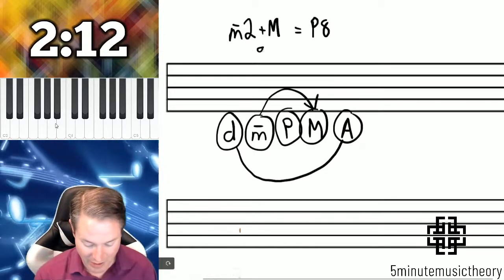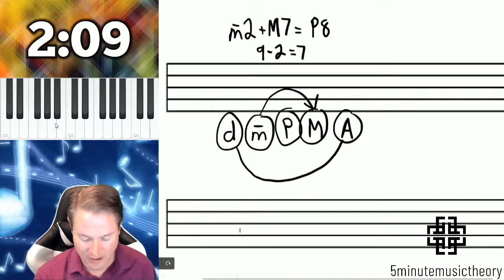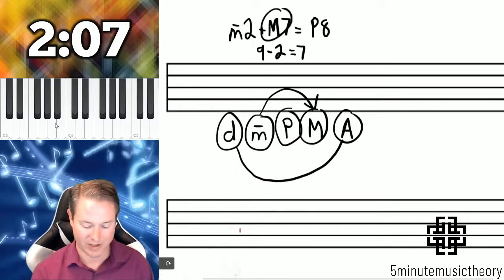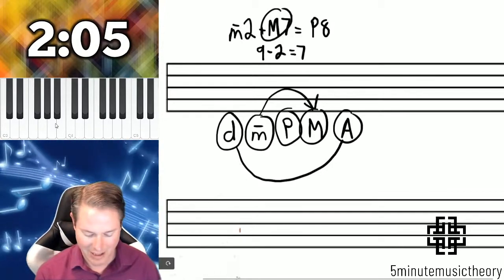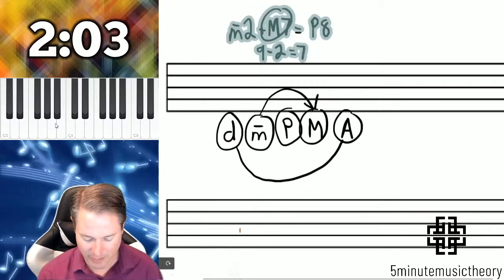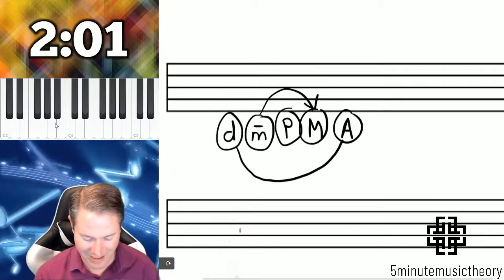And that's seven. Therefore, the complementary interval to a minor second is a major seventh. That sounded like a mouthful, so let me do a couple others really quickly so you can see how this works.